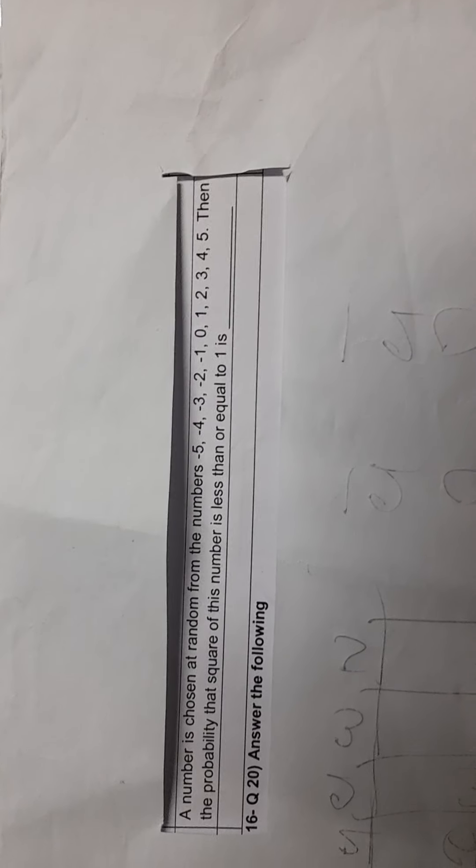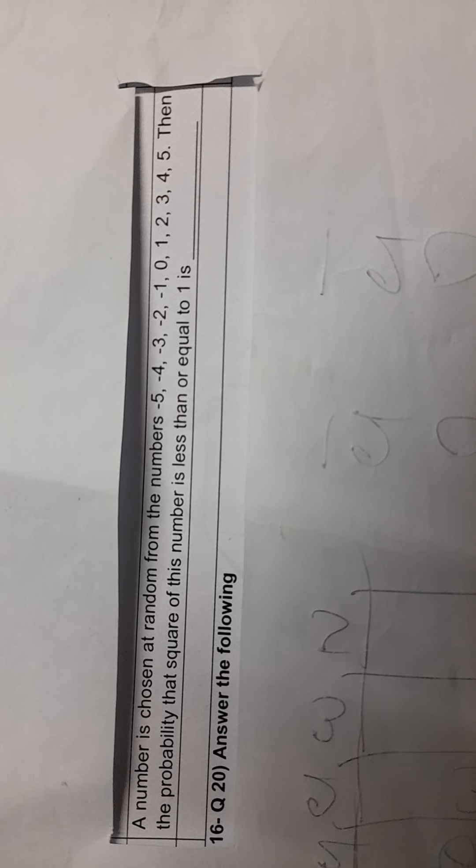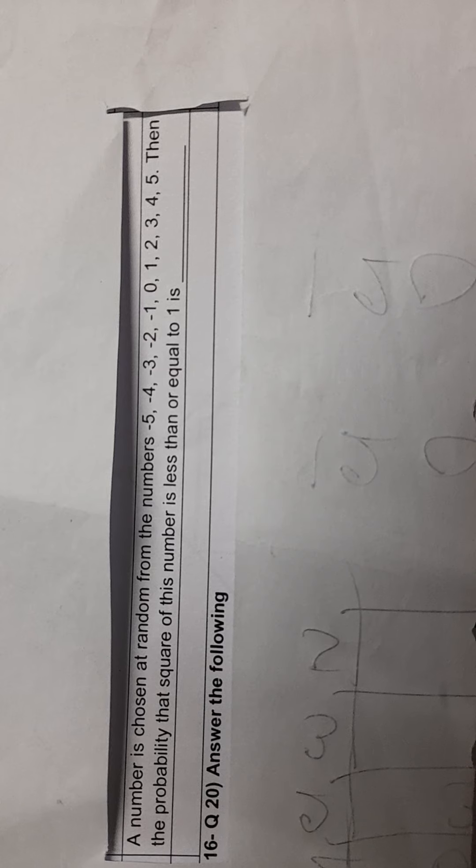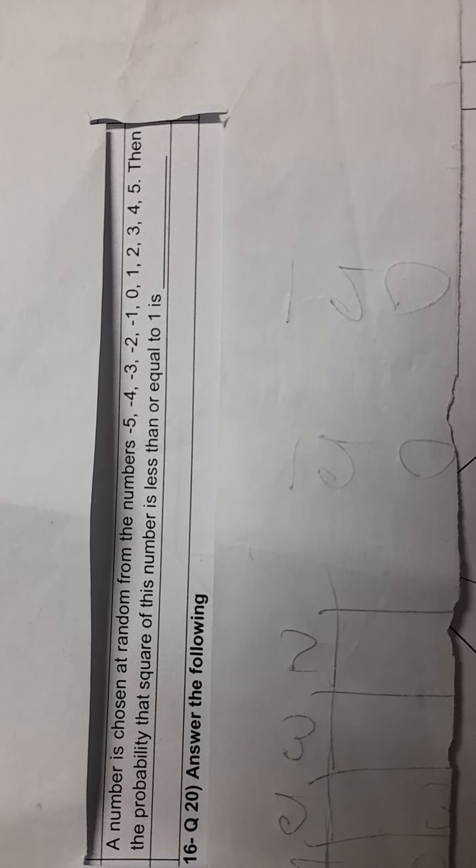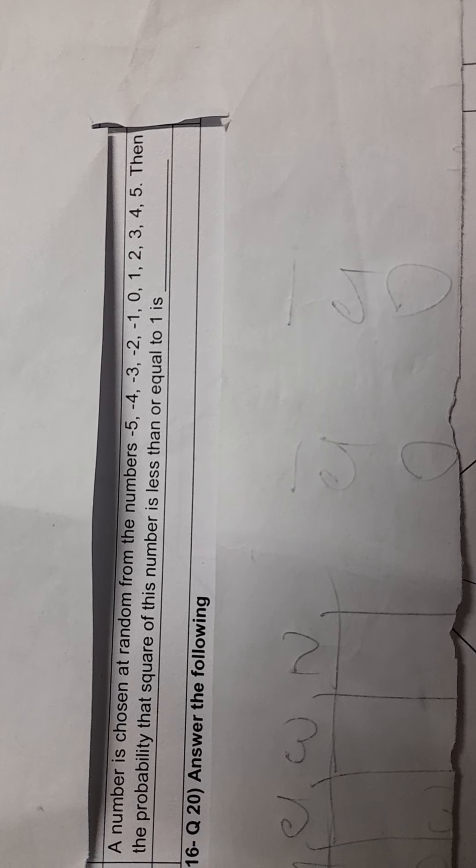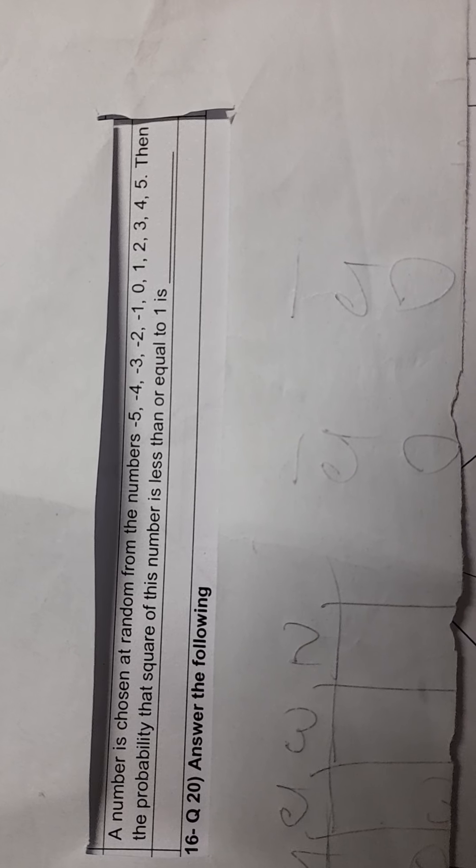Hello guys, the question is before you. The question is a number is chosen at random from the numbers minus 5, minus 4, minus 3, minus 2, minus 1, 0, 1, 2, 3, 4, 5. Then the probability that the square of this number is less than or equal to 1.